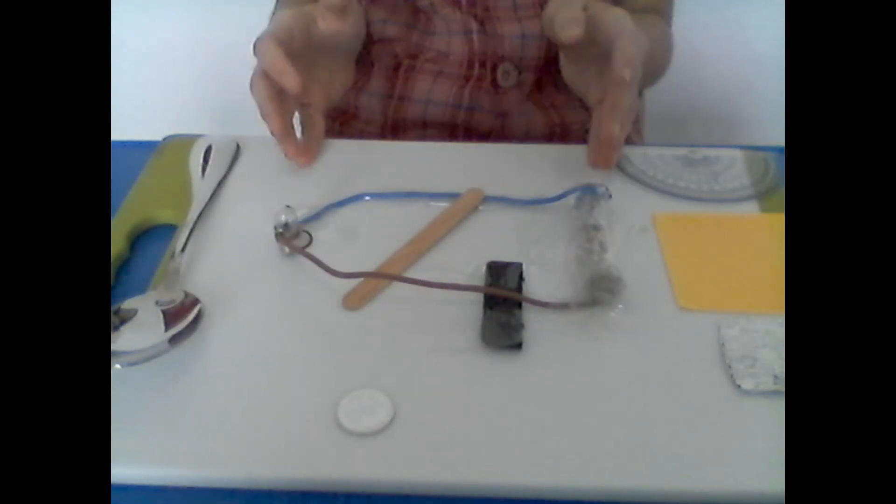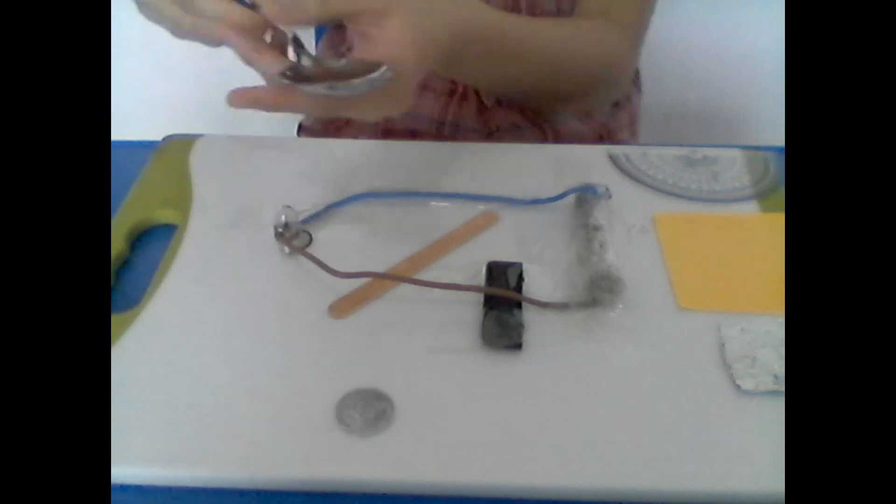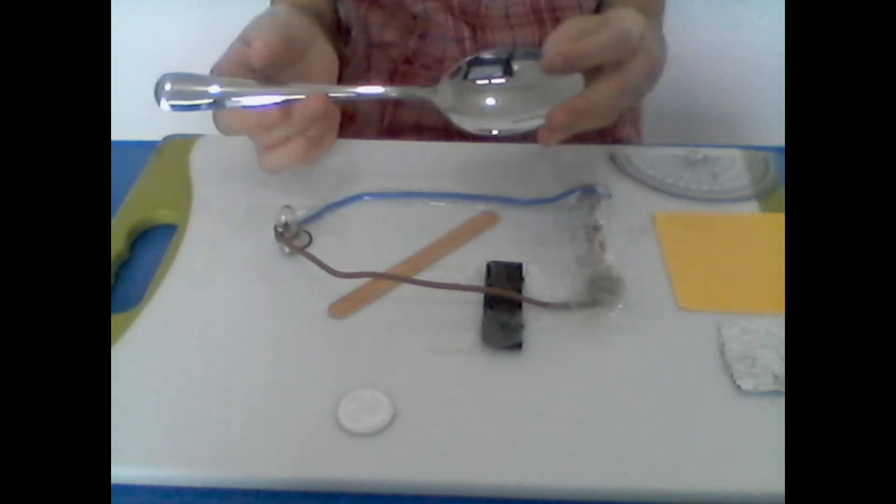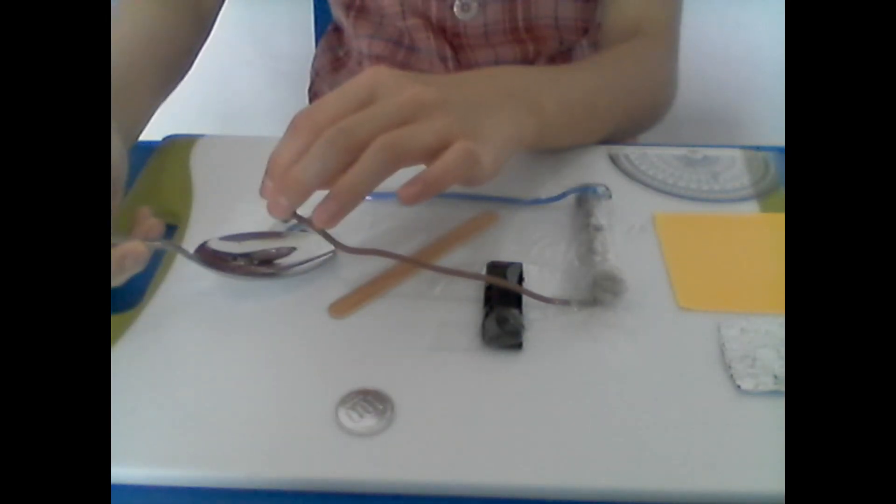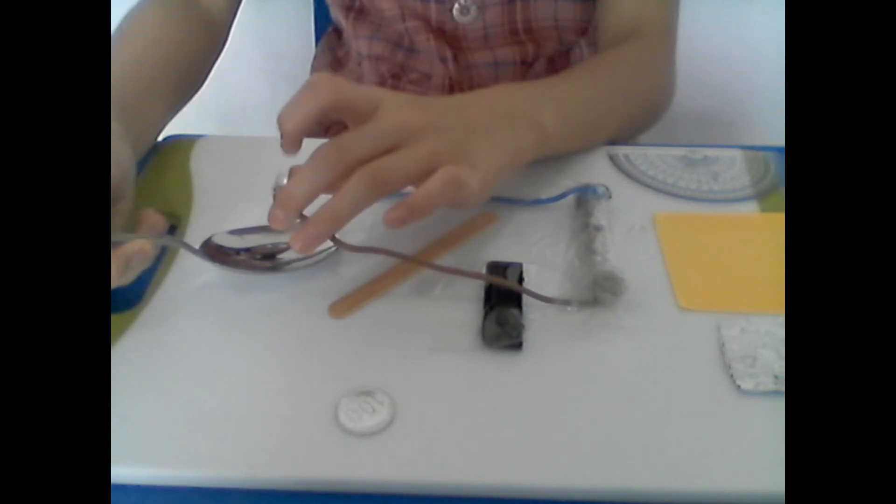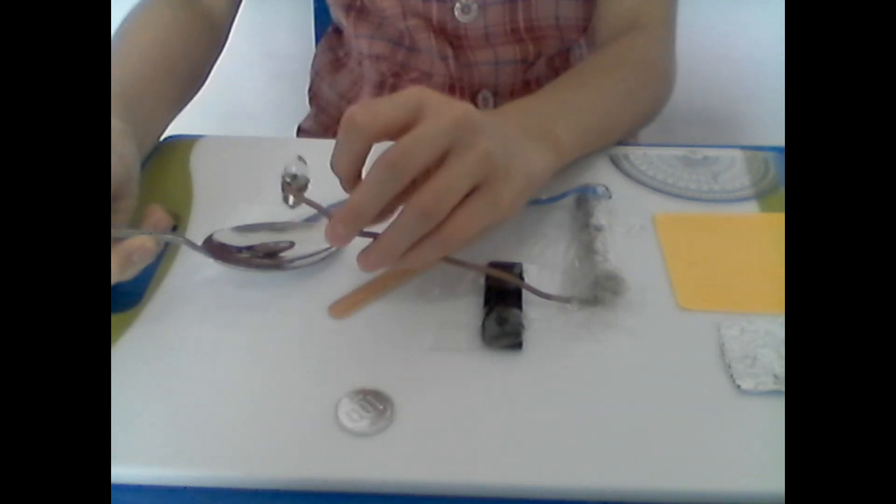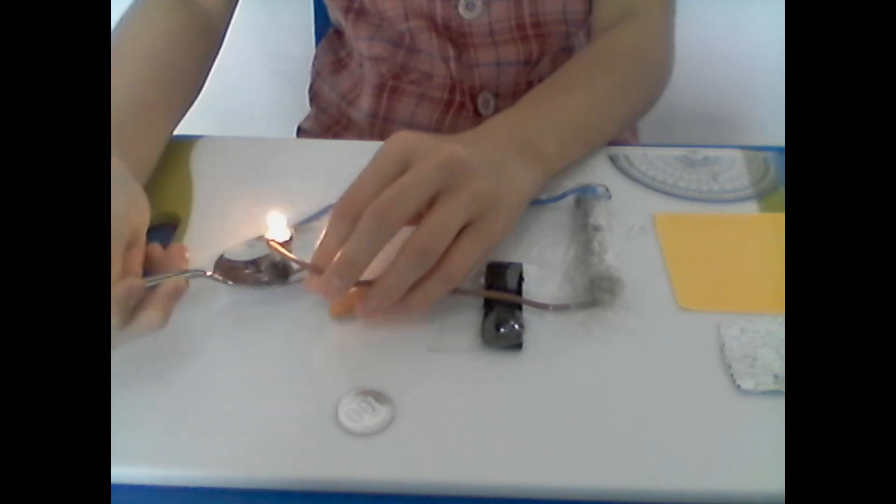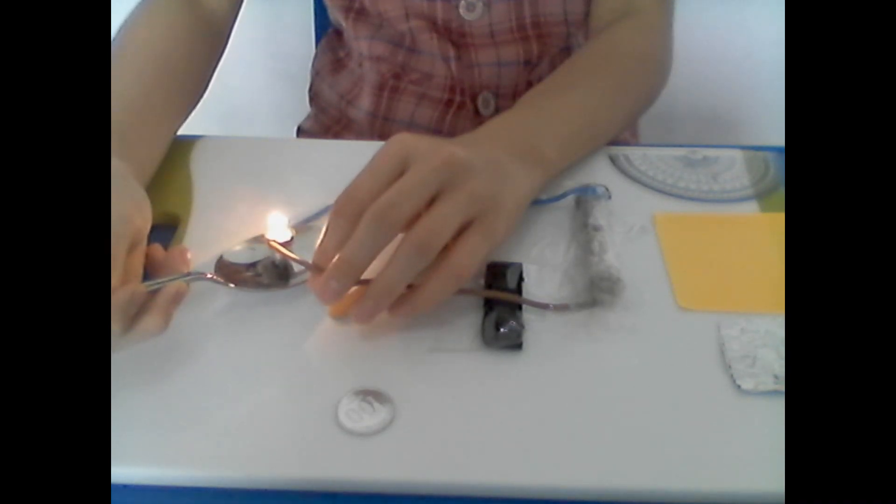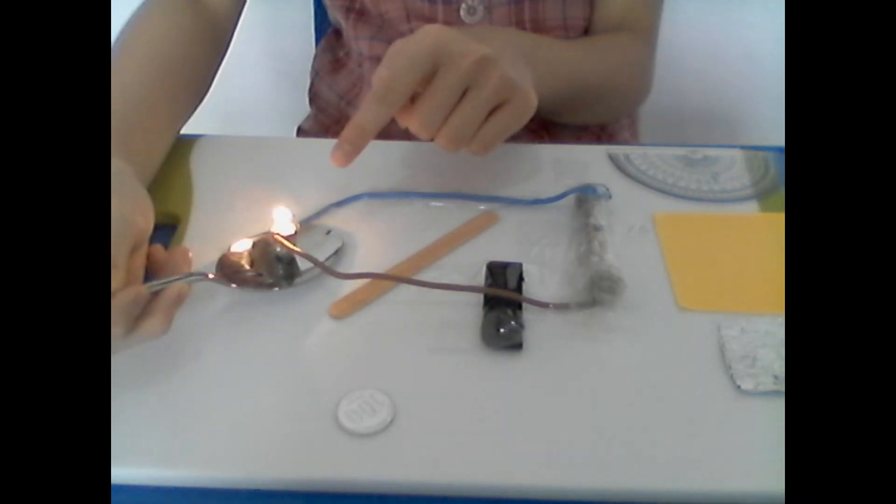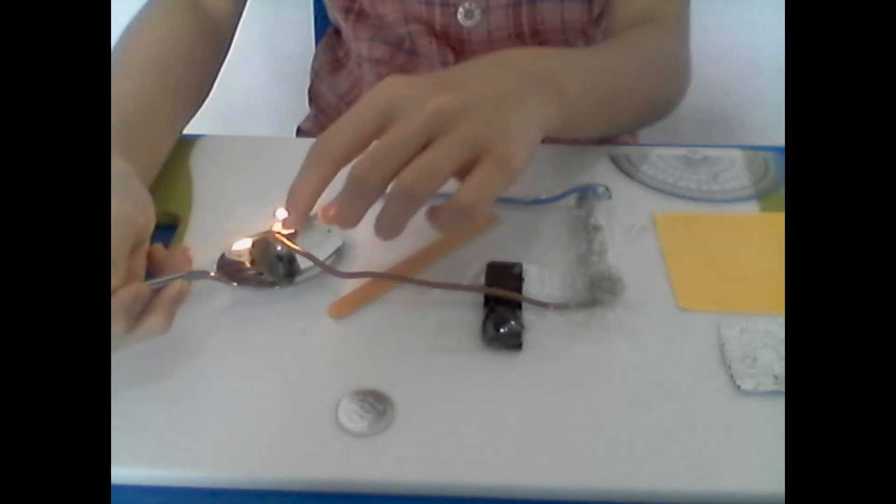Guys, now let's try this project out. First, we're going to try a metal spoon. We put the spoon on the wire and let's see if this light bulb lights up or not. The light bulb can light up. That means the spoon is an electric conductor.